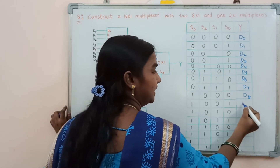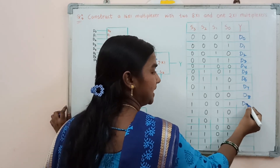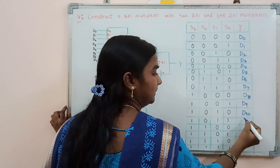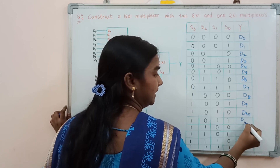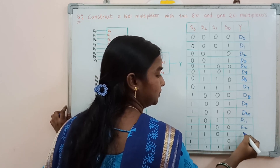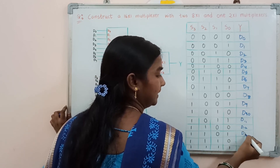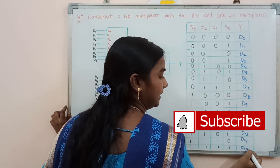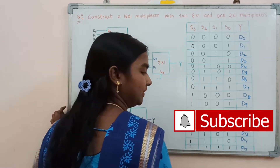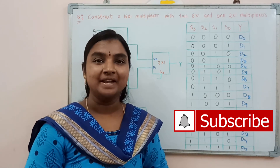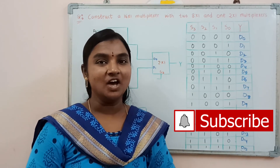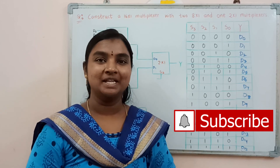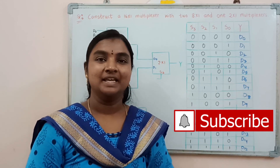In a similar way, it is going to select the other inputs like D10, D11, D12, D13, D14, and D15. In this manner, we may construct any large multiplexer by using smaller multiplexers. Thank you.